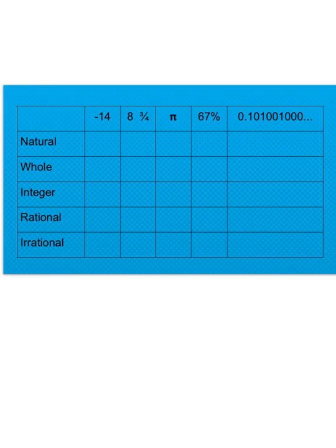So let's look first at the negative 14. Negative 14 was not a number that you counted your Cheerios with when you were a little person. It's not natural. It's also not a whole number. It's not zero or a counting number. But it is something you would put on that number line, so it's an integer. I can make it into a fraction simply by putting a one underneath it, so it is rational. If it is rational, it is not irrational.